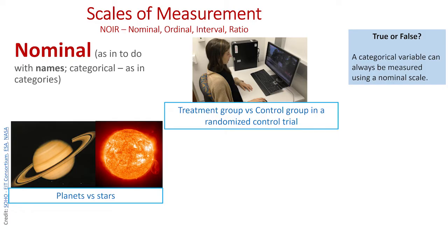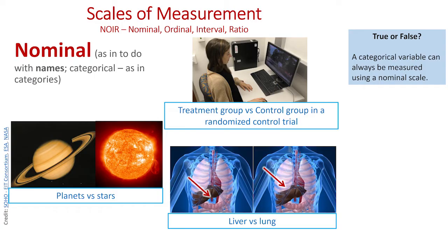Examples of nominal scales from other disciplines: in astronomy, classifying things as planets versus stars is a nominal scale. In human physiology, liver versus lung — two discrete categories with no sliding scale between them. The reason I'm covering other disciplines is to show that measurement concepts apply not just to psychology but to almost any domain. True or false: a categorical variable can always be measured using a nominal scale. That's true, because categorical and nominal refer essentially to the same thing.